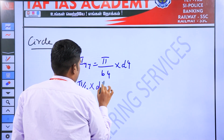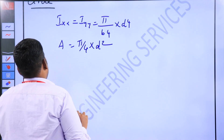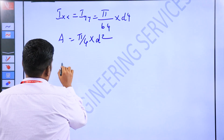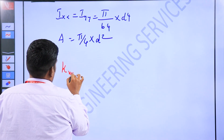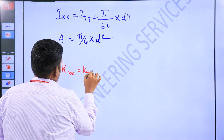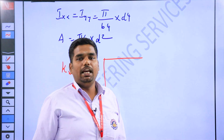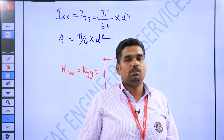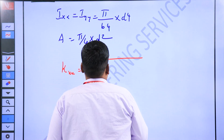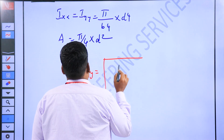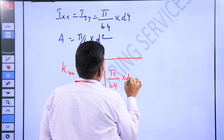pi by 4 into d squared. So radius of gyration about the x-x axis equal to y-y axis. The area will be the same, so I divided by A: Iyy = pi by 64 into d to the power 4.